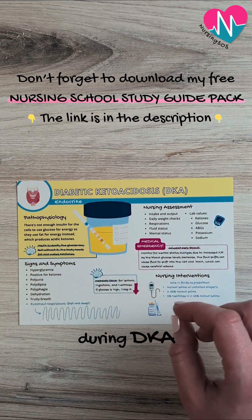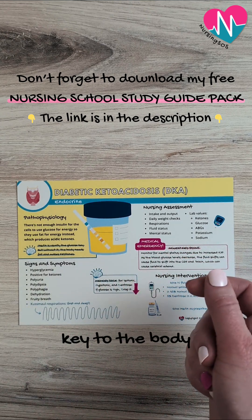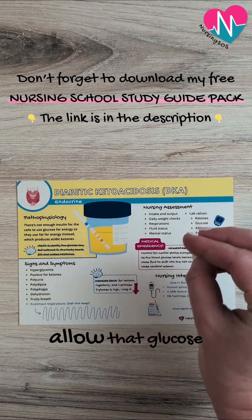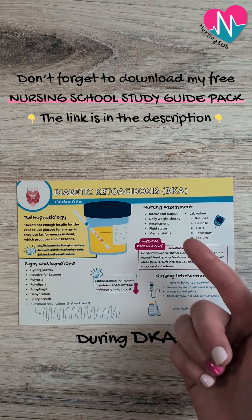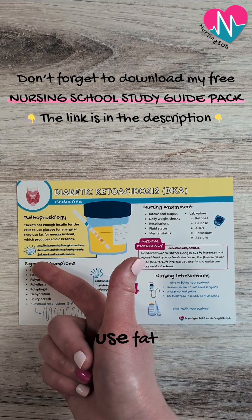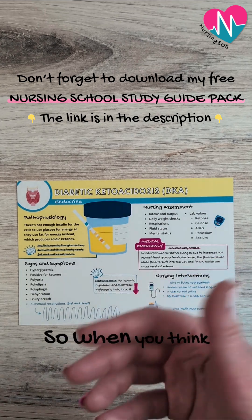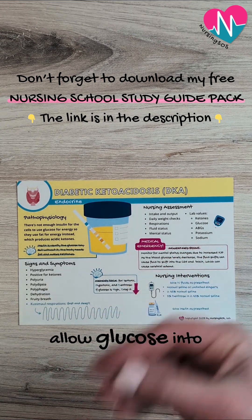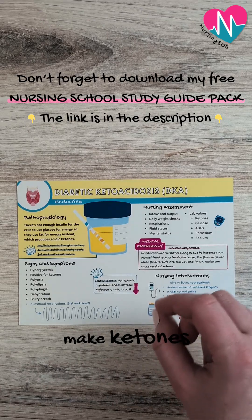During DKA, insulin normally acts like a key to the body's cells — it unlocks them to allow glucose in. But without that insulin key, the body can't get glucose into its cells. Instead, it needs to use fat, and that fat then makes ketones. Without that key to allow glucose into the body cells, the body is going to use fat and make ketones.